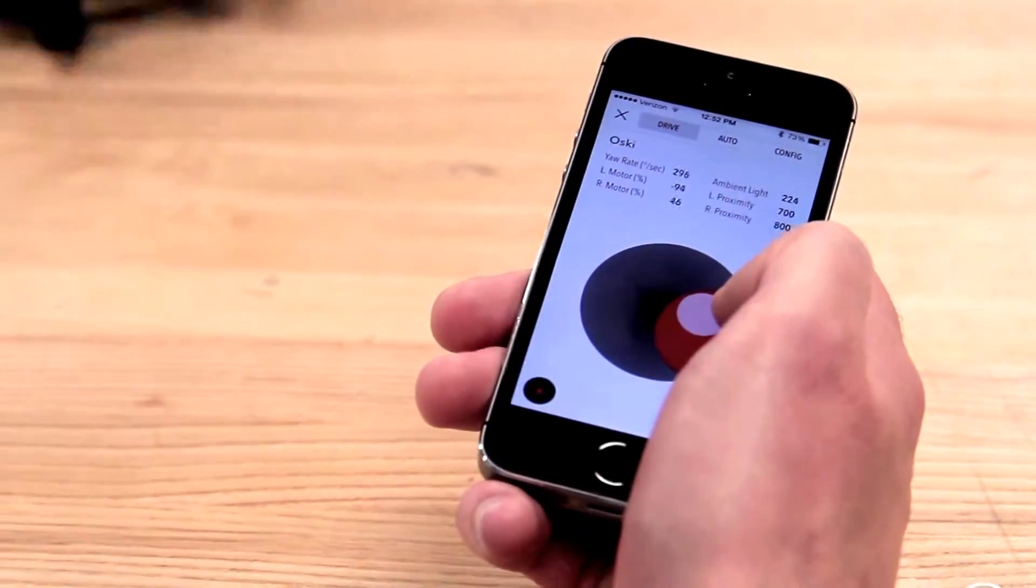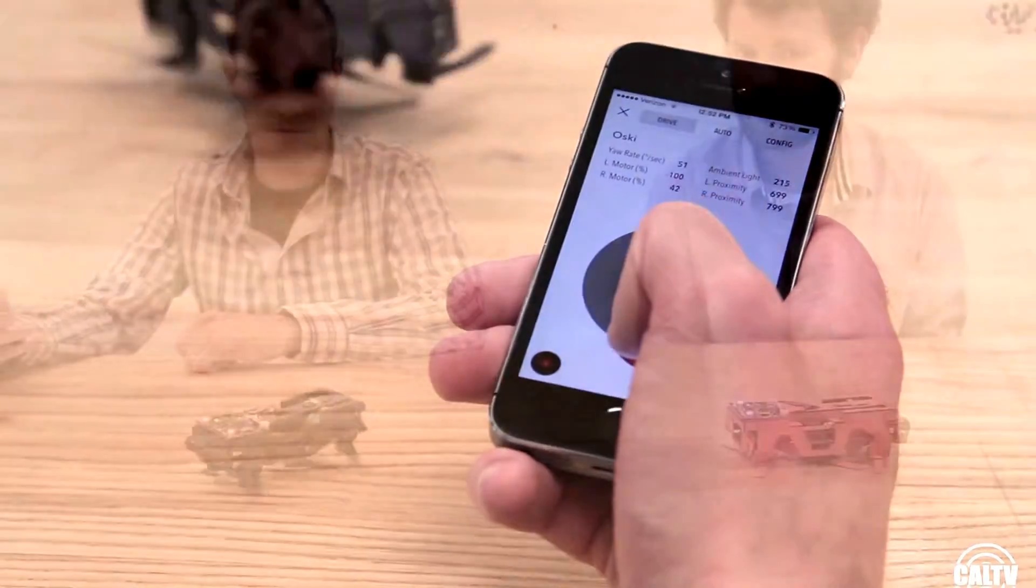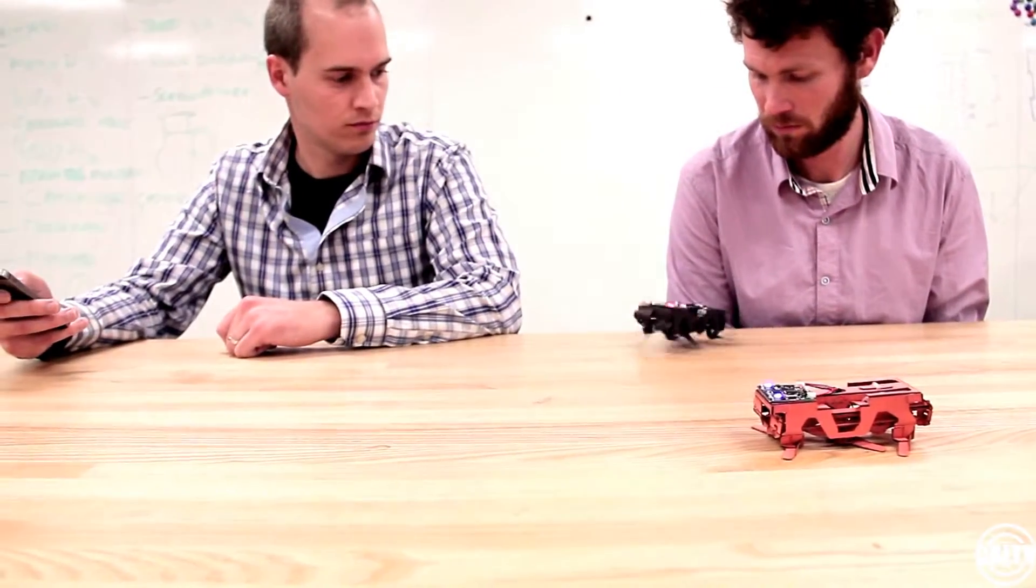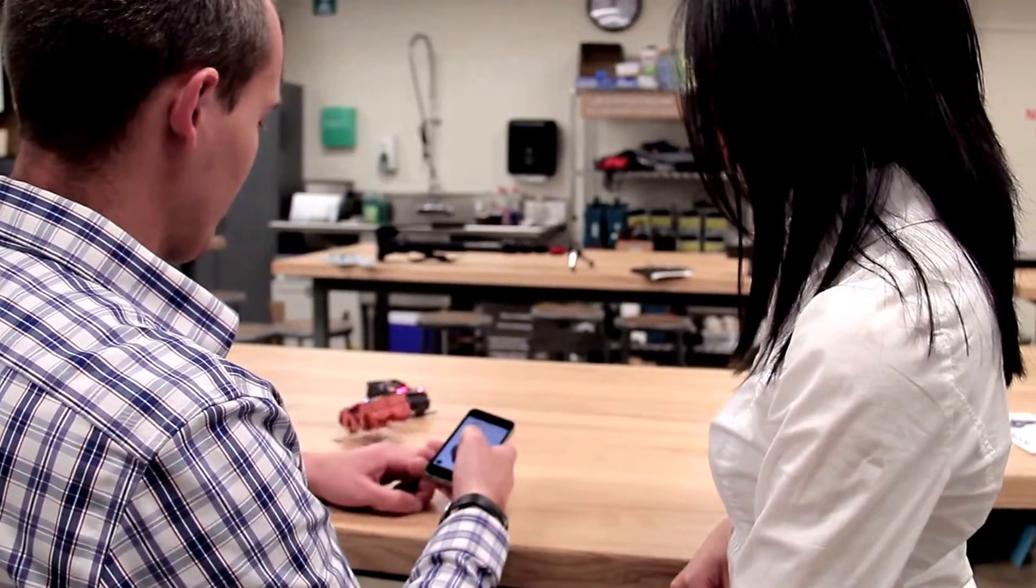In addition to its design and easy assembly, Dash is unique because it can be programmed to perform different tasks using a smartphone app.